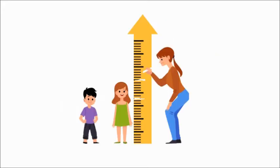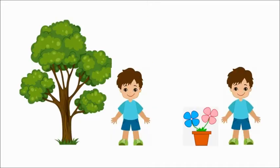So children when we see the height of two things we will know which is tall and which is short. When you stand near a tree you are short and the tree is tall, and when you stand near a flower plant you are tall and the flower plant is short.